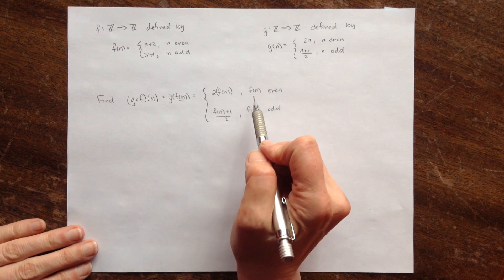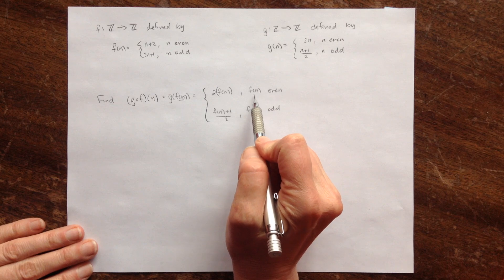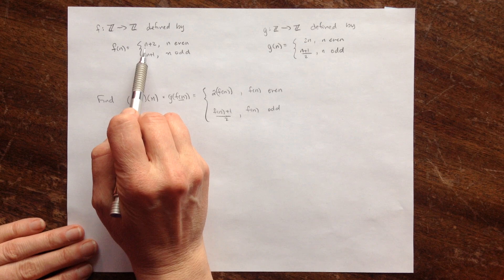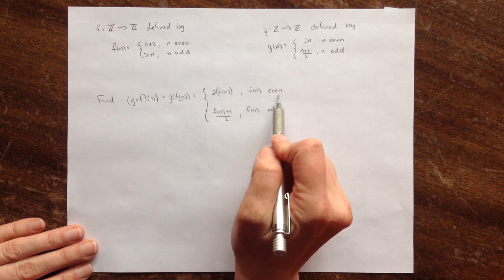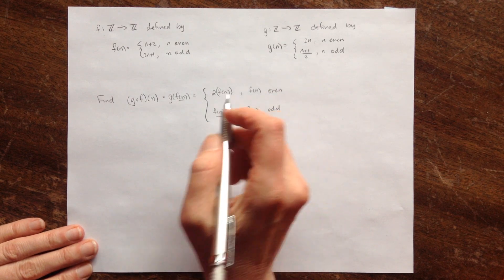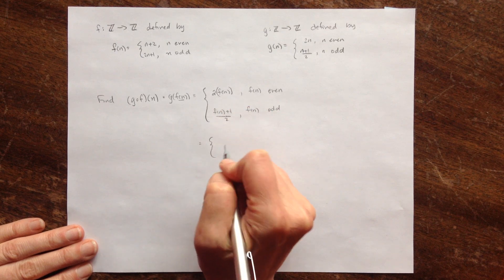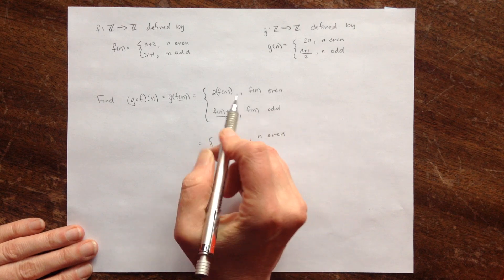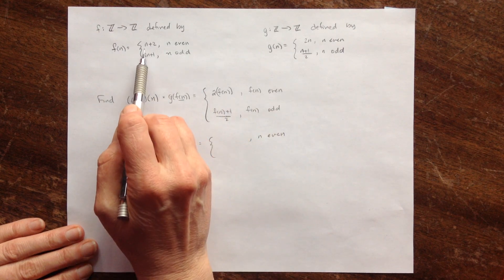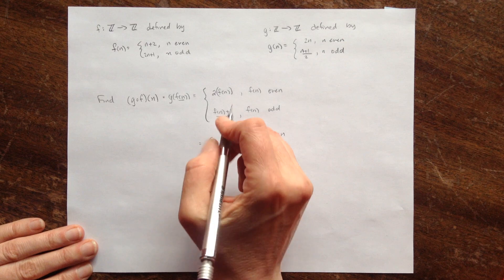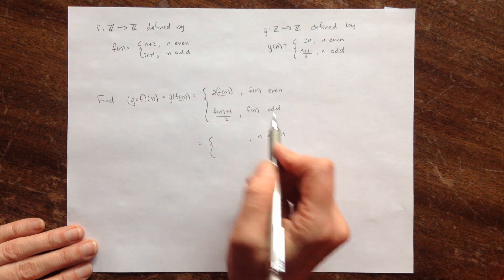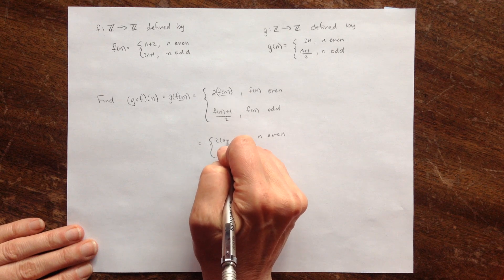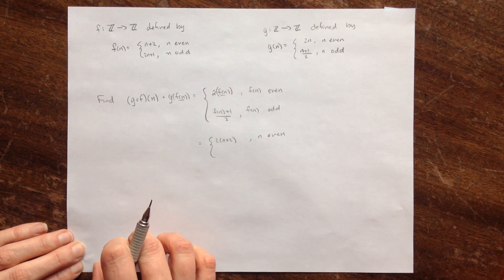The question is: when is f of n even? If you look at f of n and plug an even in, you're going to get an even out. So f of n is even when n is even. I can make this rule apply when n is even, and when n is even, f of n is equal to n plus 2. So I replace f of n with n plus 2, giving 2 times (n plus 2), if n is even — which also makes f of n even.